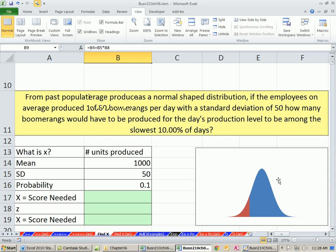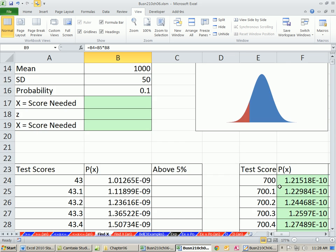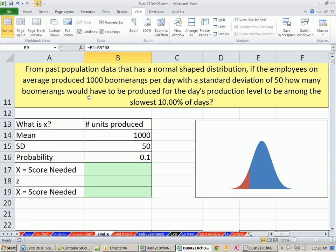Here's another example. From past population data that has a normal shaped distribution, if employees on average produce 1,000 boomerangs per day with a standard deviation of 50, how many boomerangs would have to be produced for the day's production level to be amongst the slowest 10% of days? This is a boomerang manufacturing company.